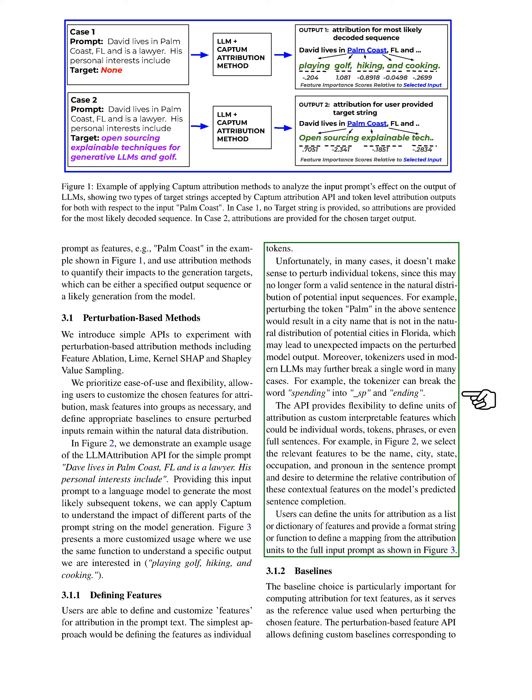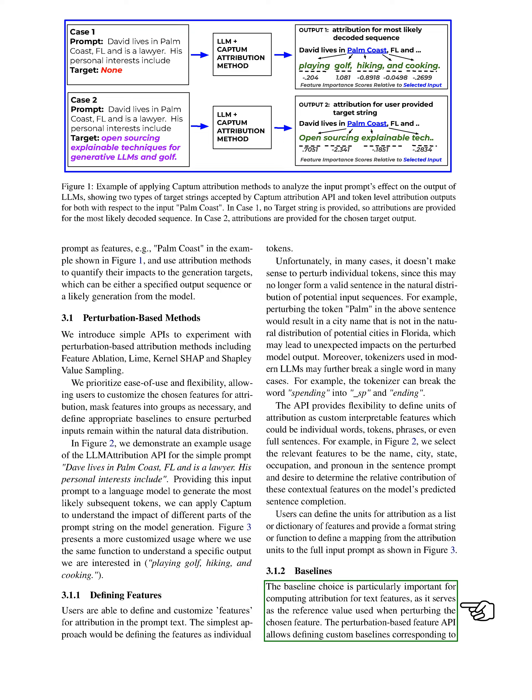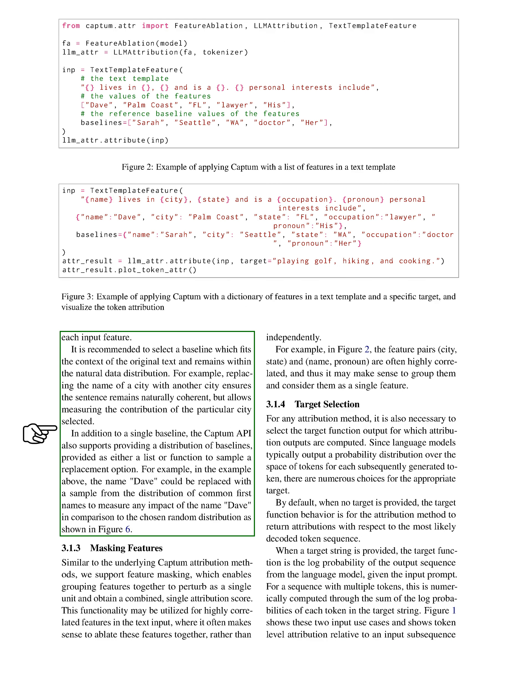The API provides flexibility to define units of attribution as custom interpretable features, which could be individual words, tokens, phrases, or even full sentences. For example, we can select the relevant features to be the name, city, state, occupation, and pronoun in a sentence prompt, and determine the relative contribution of these contextual features on the model's predicted sentence completion. The choice of baseline is particularly important for computing attribution for text features, as it serves as the reference value used when perturbing the chosen feature. It is recommended to select a baseline which fits the context of the original text and remains within the natural data distribution.